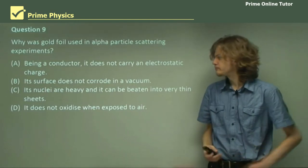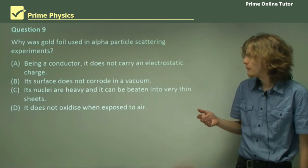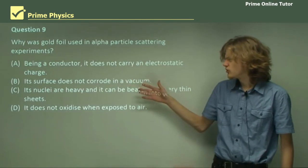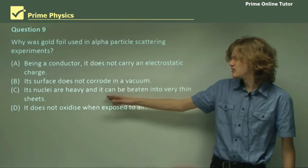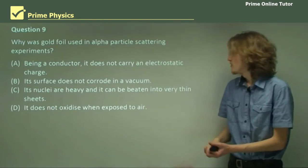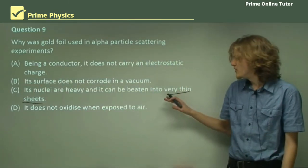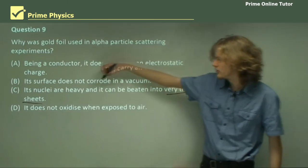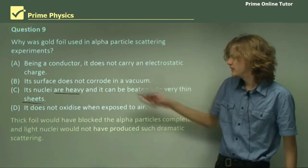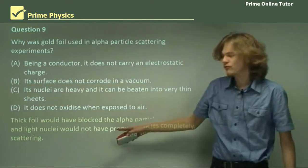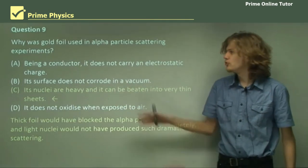Question nine. Why was gold foil used in alpha particle scattering experiments? Well, all of these are properties of gold, but only one of them is useful for this sort of experiment. Conductor, we don't need to worry about conducting. Its surface does not corrode in a vacuum, we don't really need to deal with that much of a vacuum. It does not oxidize when exposed to air, we're not really worrying about air here. Our last option is, it's nuclear heavy, and it can be beaten into very thin sheets. If we only want to deflect the alpha particles and not block them completely, then this is a very important property of the gold foil. It also has heavy atoms, which would be useful if you're measuring deflection. So, of course, our answer here is that because we can't use thick foil and because we need heavy atoms, we can use this property of gold atoms in the alpha scattering experiment. C is the correct answer.